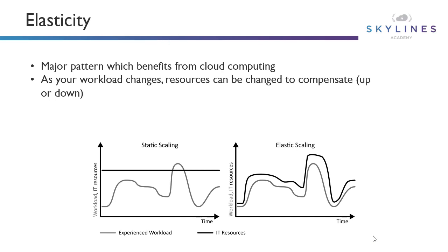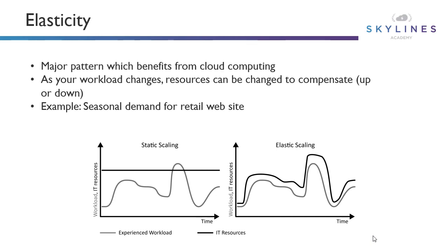But you can see we're able to tailor it based on demand. Good examples of this are seasonal demand — for example, a retail website. On Black Friday, retail websites often get hit very, very hard. So we could ramp up the resources to compensate for that and then push them back down after that event happens.